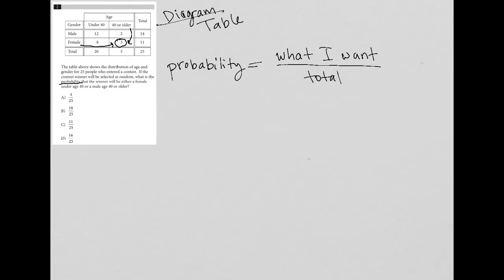So we know that the winner will either be a female under age 40. Well, that means the what I want is a female under age 40, which takes me here in the table. So that's eight. The total number of people that I'm choosing from is 25.